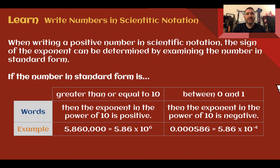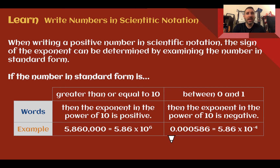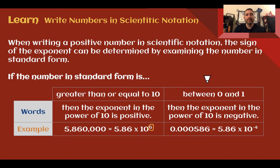Let's learn: write numbers in scientific notation. When writing a positive number in scientific notation, the sign of the exponent can be determined just by examining the number in standard form. If the number is greater than or equal to 10 — starting at 11 all the way up — the exponent is going to be positive. If the number is between 0 and 1 — a very small number — then the exponent will be negative. If you see the decimal place before the numbers, you know your exponent is going to be negative.